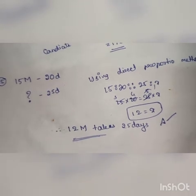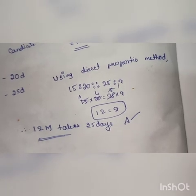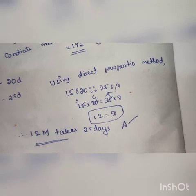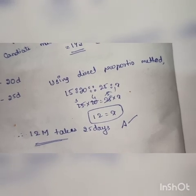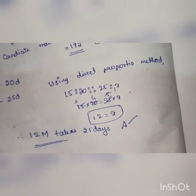Last, fifth question. 15 men can complete a piece of work in 20 days. How many men will complete the same in 25 days? Using direct proportion method: 15 into 20 equals x into 25.